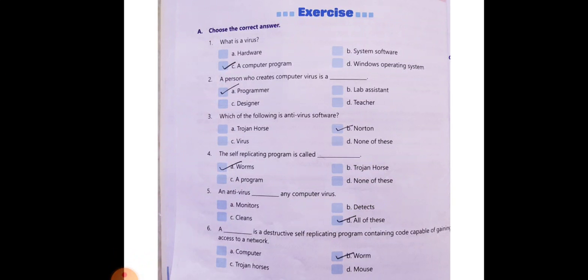First is multiple choice questions. You have to choose one correct answer from the given options. What is virus? Answer is option C, a computer program.